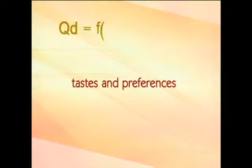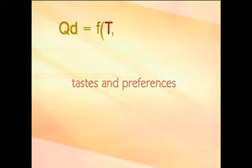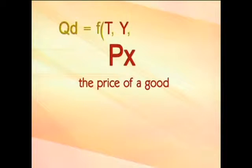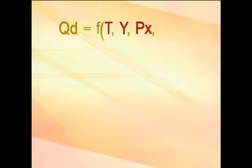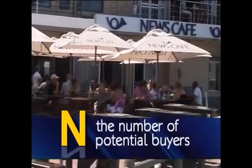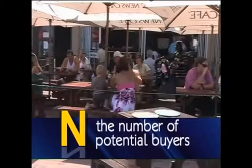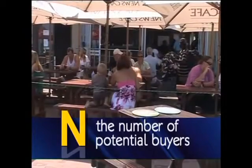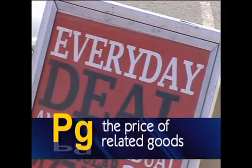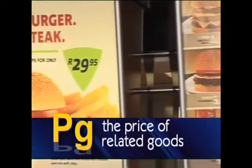Using these symbols, we can now say that the demand for fried chicken at any given time is a function of taste and preferences, T, the income of these prospective buyers, Y, and the price of fried chicken pieces, PX. There are other factors, however, that also affect the quantity demanded, such as the number of potential buyers willing to purchase, indicated by the symbol N. And then there's the price of related goods, indicated by PG.